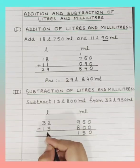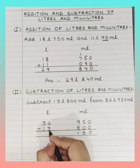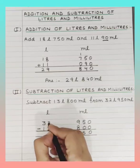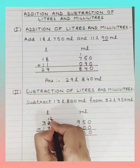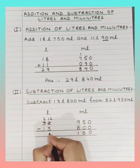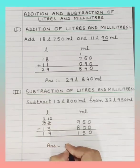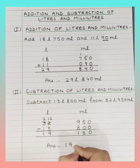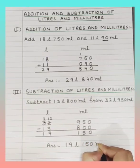Now we subtract 13 liters from 32 liters. Here 2 is smaller than 3, so we cannot subtract 3 from 2. It borrows from 3 and it becomes 12. Now 12 minus 3 is 9 and 2 minus 1 is 1. The answer is 19 liters 150 milliliters.